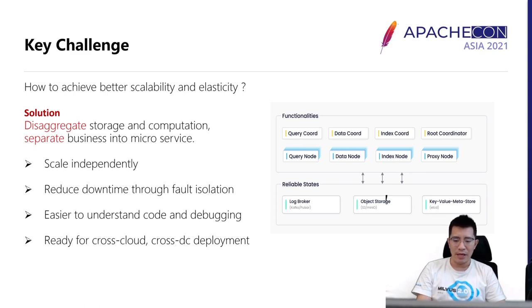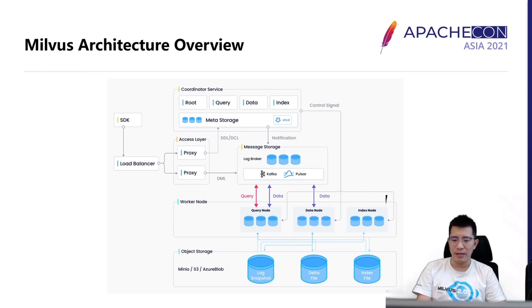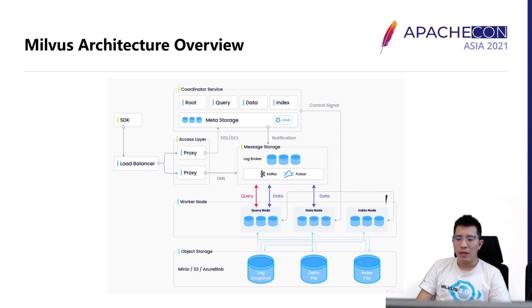Another thing to mention is that we separate the control plane and the computing plane. This gives us the ability to deploy across clouds and across data centers. Finally, the whole architecture of Milvus comes into the big picture. Milvus is an advanced design in line with the concept of cloud-native, which helps achieve better elasticity and availability. The whole system takes log as its backbone. Computation and storage are totally disaggregated, and we unified stream and batch ingestion by a well-designed timestamp scheme.